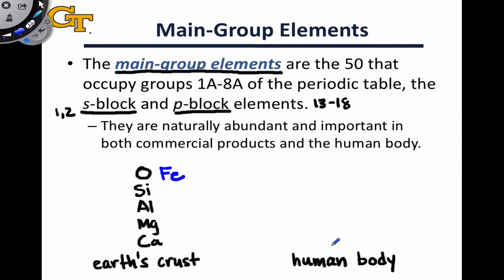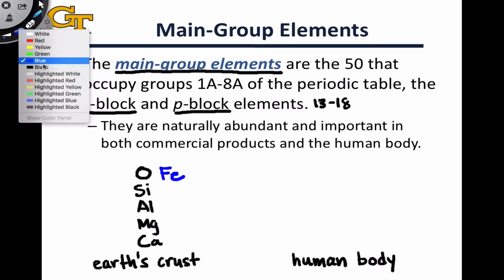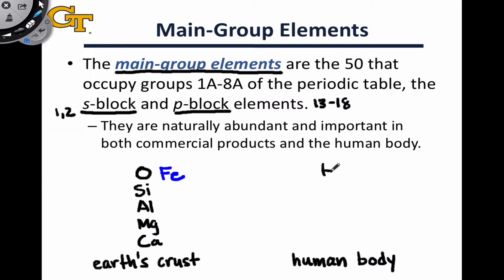In the human body, the importance of the main group elements is even stronger, where we have hydrogen, carbon, oxygen, and nitrogen as the four big players, as well as other players, such as calcium, phosphorus, and sulfur. These are all main group elements, and really the concentrations of transition metals in the human body are much lower than the concentrations of main group elements.